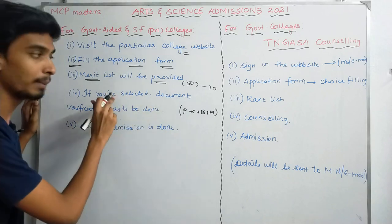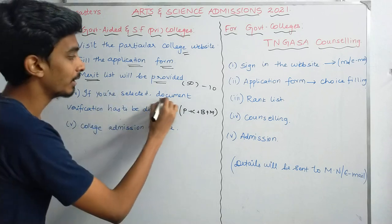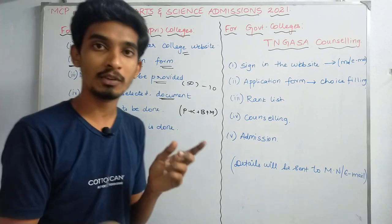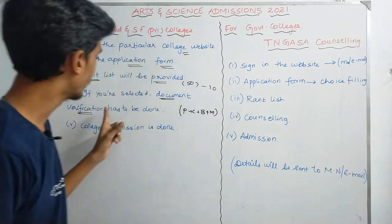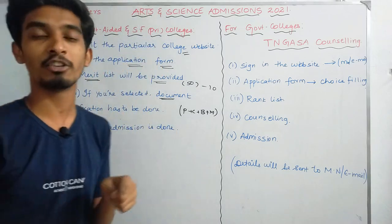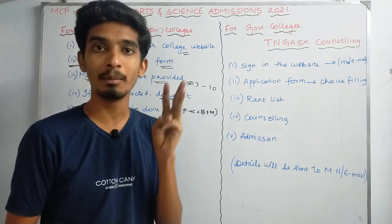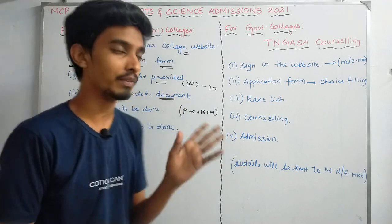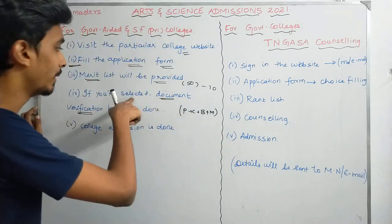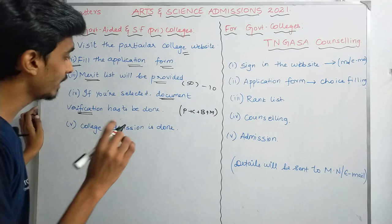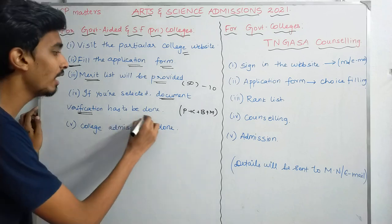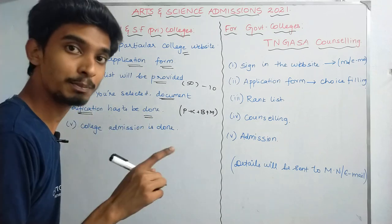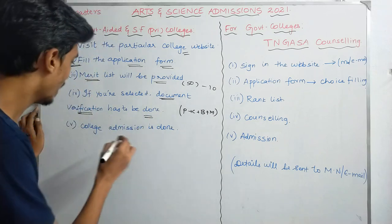If you go to the college website to apply, the required documents are: 10th mark sheet, 12th mark sheet, community certificate, TC, and birth certificate. You need to scan and upload these. There are also fees to be paid online.